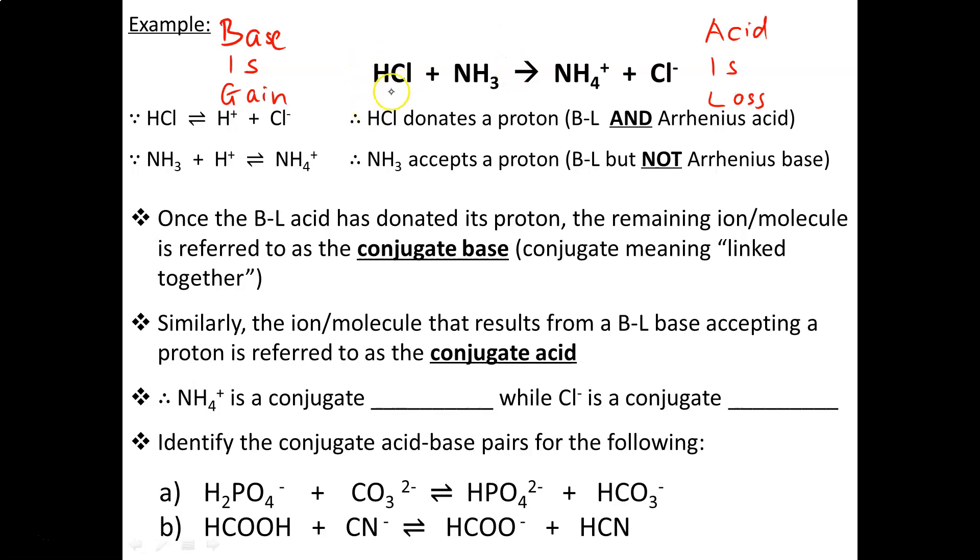Looking at the reaction between hydrochloric acid and ammonia, we notice that HCl turns into Cl-. What's happened between here and here? The H has disappeared. Whoever loses the H is considered the acid. Thus, HCl is considered to be an acid. Versus NH3, from here to here, it's gained an H, gained the proton. Because it's gained it, base is gain, this is considered to be the base.